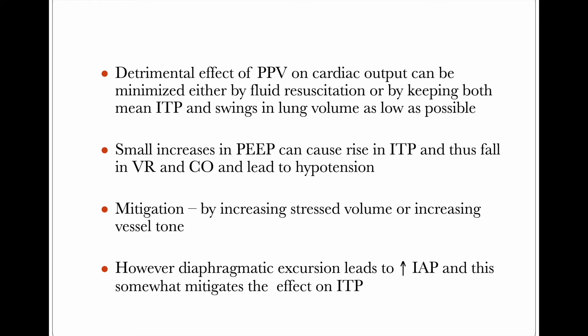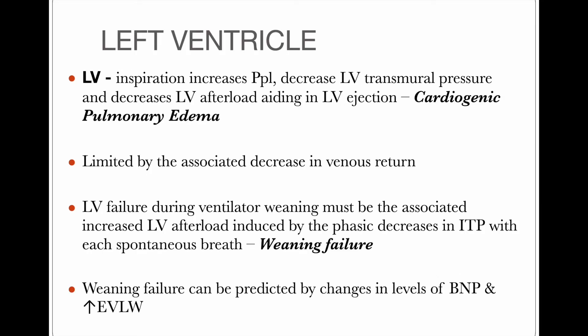However, in positive pressure ventilation, the diaphragm goes down during inspiration. As the diaphragm descends, there is a rise in intra-abdominal pressure, which somewhat reduces the effect of raised intrathoracic pressure by draining vessels from the abdomen into the thorax, although not completely. Regarding the effect of positive pressure on the left ventricle: positive pressure ventilation increases pleural pressure rather than decreasing it. As pleural pressure increases, LV transmural pressure will decrease, which decreases LV afterload, aiding in LV ejection.